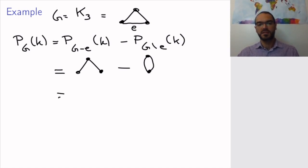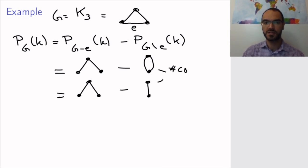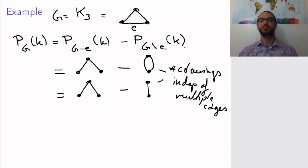Now, this first graph, let me leave it by this, but let's simplify the second one. So the number of colorings of the second graph doesn't depend on multiple edges. Remember, I only care whether vertices are adjacent or not. So I will replace this because the number of colorings is independent of multiplicity of edges.